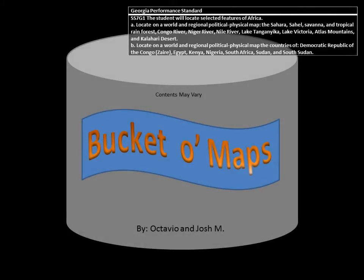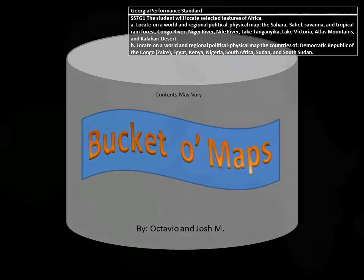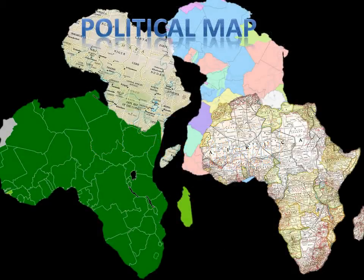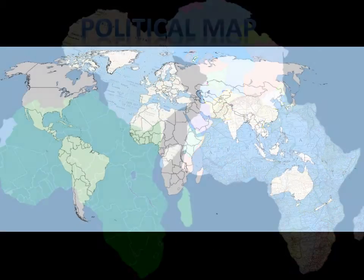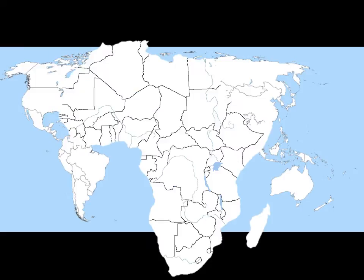Today, we have Bucket-O Maps by Octavio and Josh M. First up, we're going to look at the political map of Africa.